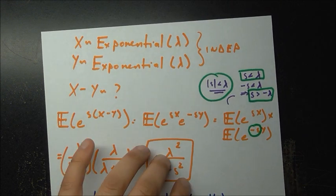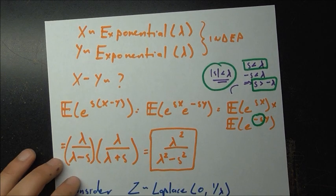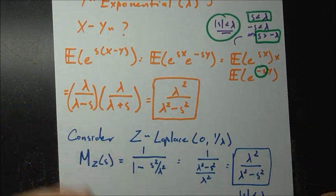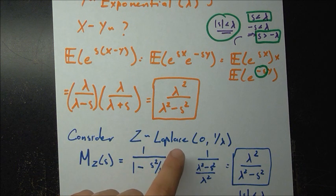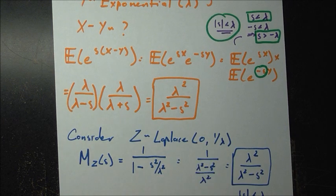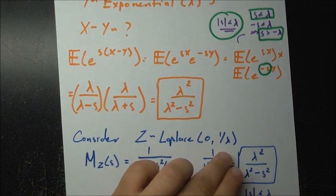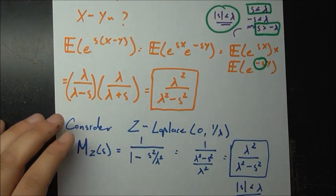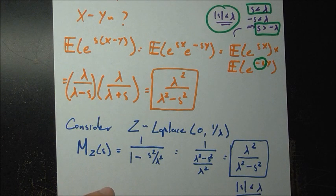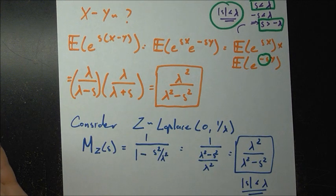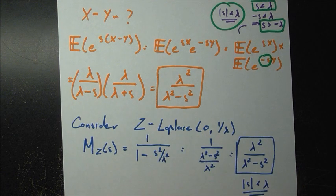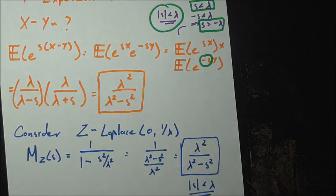Our goal is now to match this to a known distribution. We consider random variable z distributed as Laplace with mu equals zero and b equals 1 over lambda. Plugging these into the Laplace MGF formula gives e to zero over 1 minus s squared times (1 over lambda) squared, which is 1 over 1 minus s squared over lambda squared. Simplifying, this equals lambda squared over lambda squared minus s squared, which is exactly what we found for x minus y.